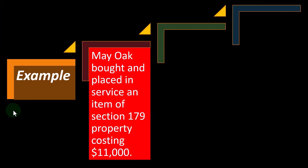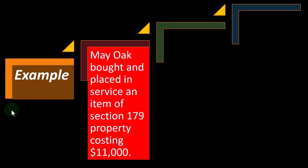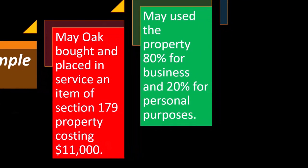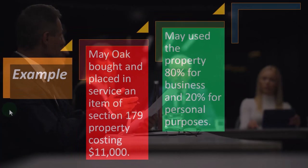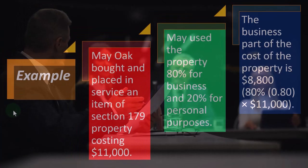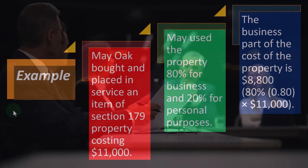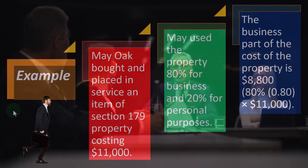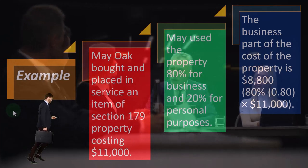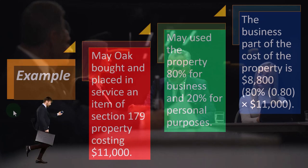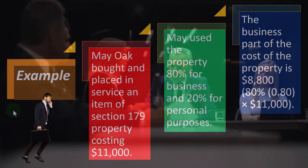Example: May Oak bought and placed in service an item of Section 179 property costing $11,000. May used the property 80 percent for business and 20 percent for personal use. The business part of the cost is 80 percent of $11,000, which equals $8,800.